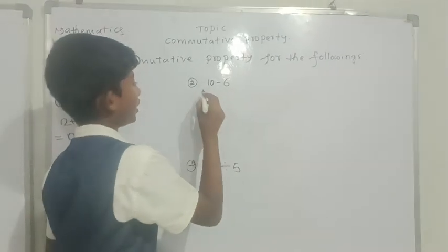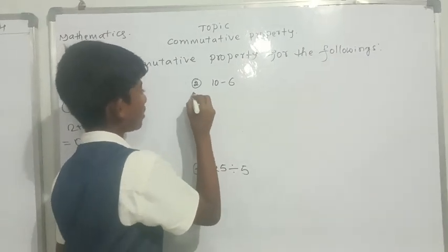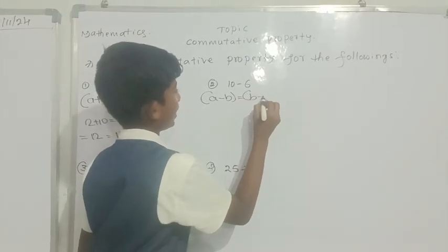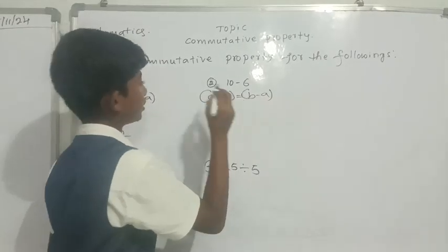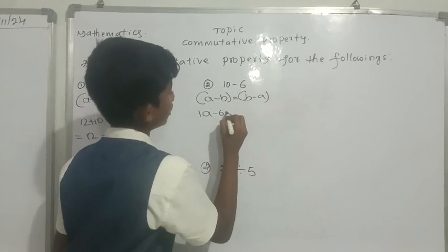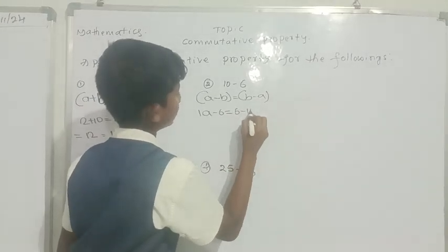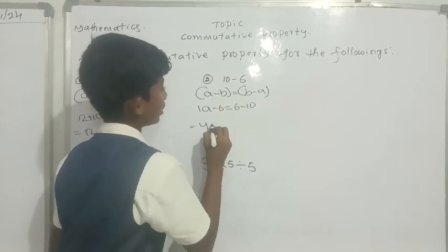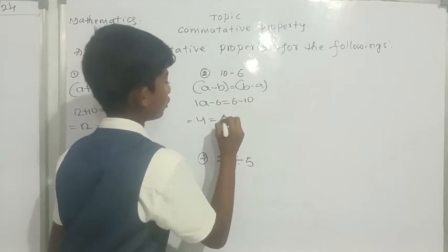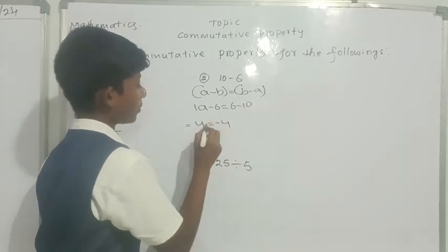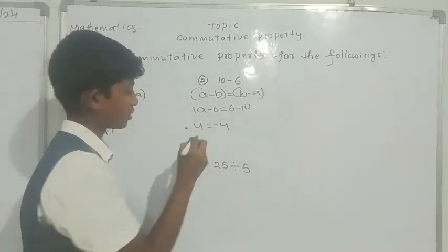Second question is 10 minus 6. The formula is A minus B is equal to B minus A. 10 minus 6 is equal to 6 minus 10. 10 minus 6 is equal to 4. 6 minus 10... because then we have minus 10, so minus. The Commutative Property is not good under subtraction.